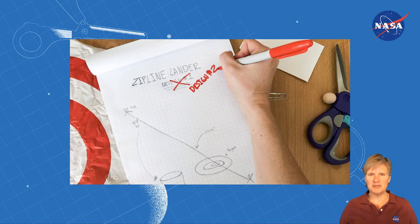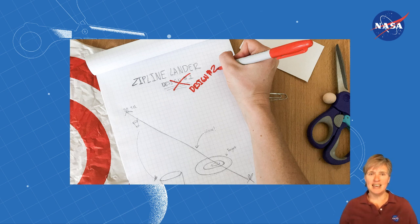Now think of how you might improve your design. Make a modification and try the experiment again. Keep making modifications and testing your design after each one to see how accurate you can get.